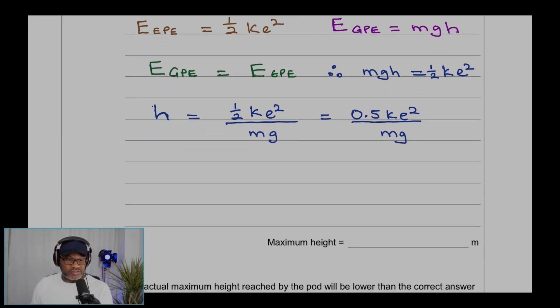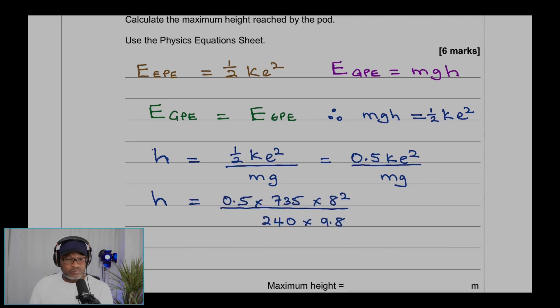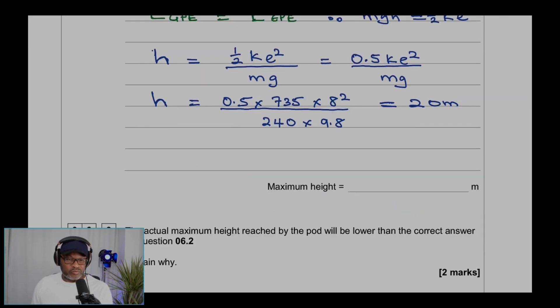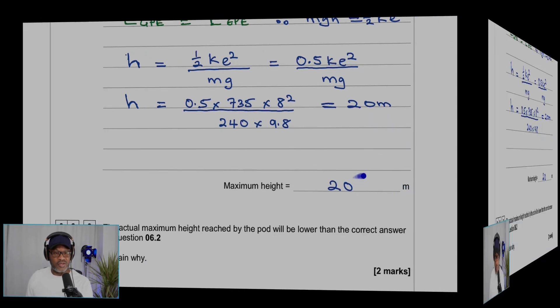Substituting the values: h = 0.5 × 735 × 8² ÷ (240 × 9.8). Therefore h equals 20 meters. We check the units required as meters, so the answer is 20 meters.